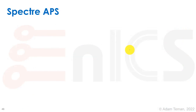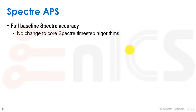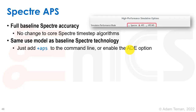Spectre APS has been the workhorse for the last several years for this type of Spectre simulation. It provides full baseline Spectre accuracy — there is no change to the core Spectre time-step algorithms — which is a really important thing. Whereas a lot of the other options give up accuracy for speed, APS was a breakthrough that sped up circuit simulation by a large amount without giving up on accuracy.